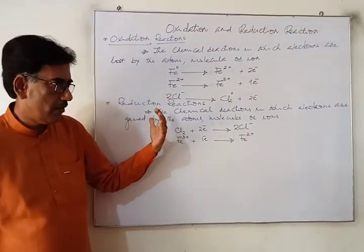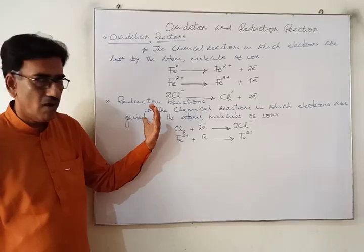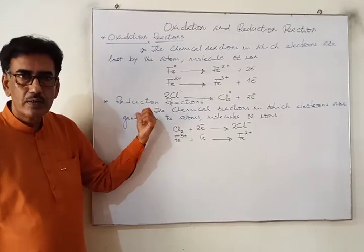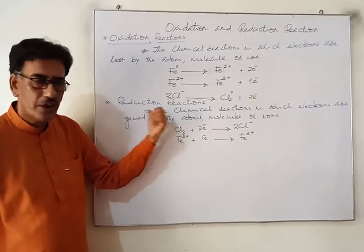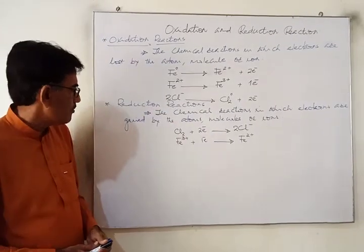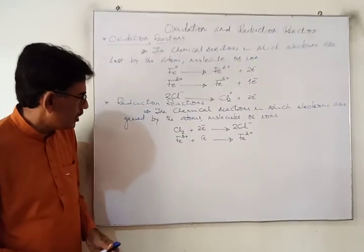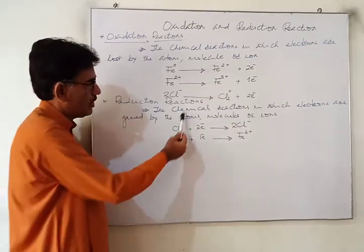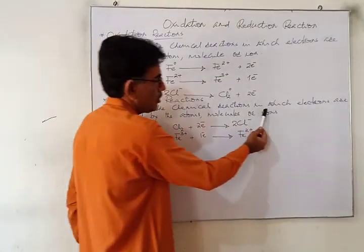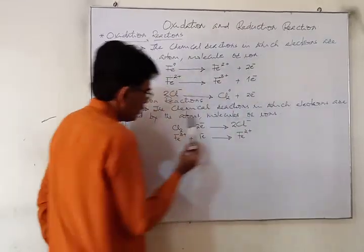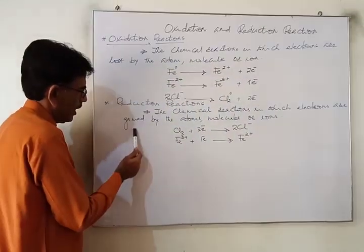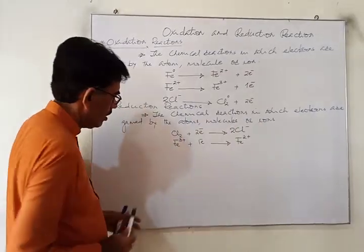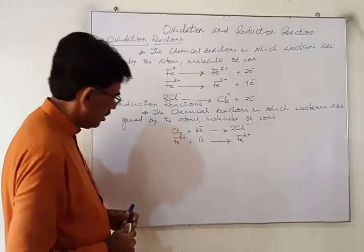We have another term for that — it is called the reduction reaction. Reduction reactions are those chemical reactions in which electrons are gained by the atom, molecule, or ion.